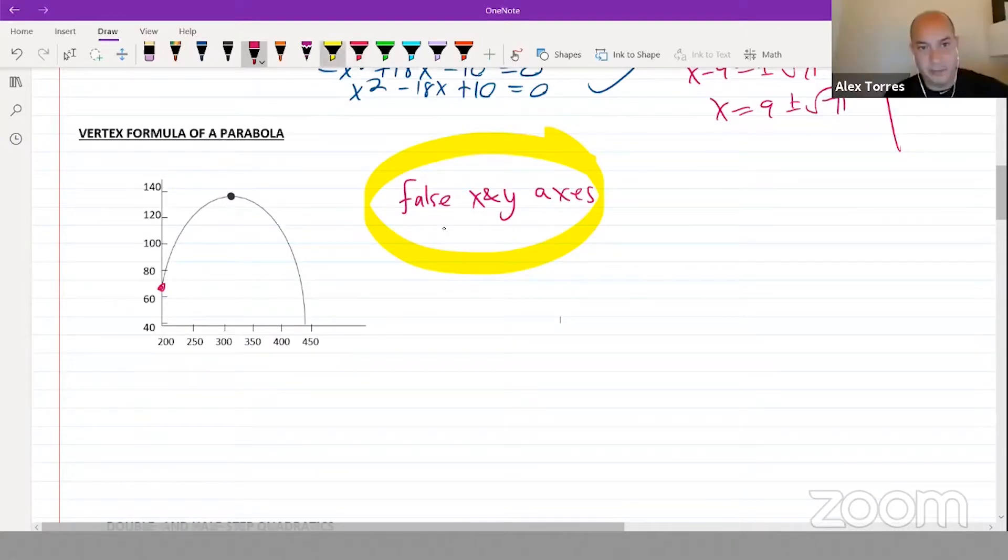One very important formula that you don't want to go into an SAT without is the vertex formula of a parabola, y equals a(x minus h) squared plus k.